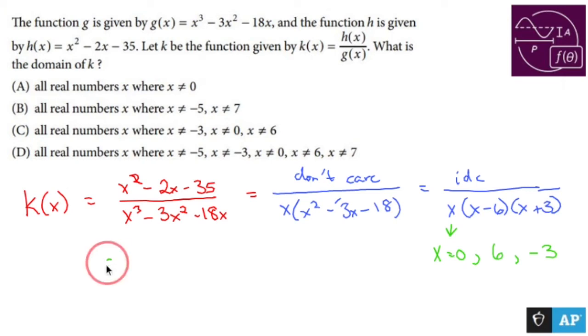Our domain is all real numbers, as stated in the options. All real numbers, but x cannot equal -3, 0, and 6. That gives us answer C.